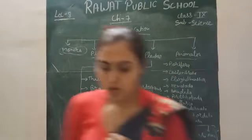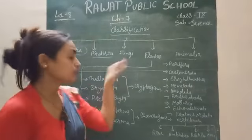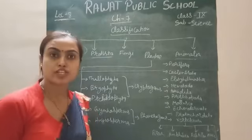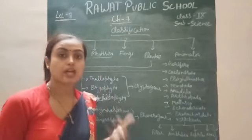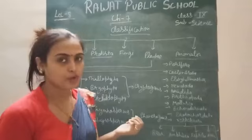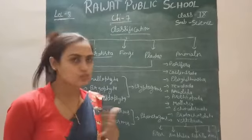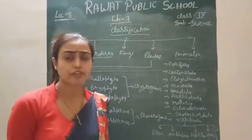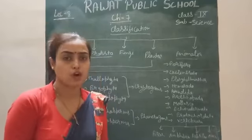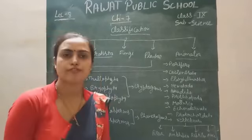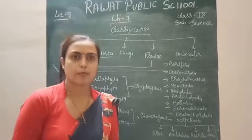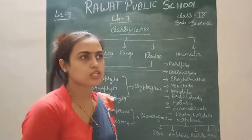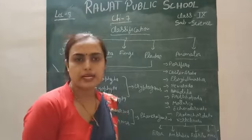Next is Fungi. Fungi consist of unicellular or multicellular but eukaryotic organisms. They have a special fiber-like structure called hyphae, which helps in the absorption of nutrients and water from the soil. They do not perform photosynthesis because they do not have chlorophyll molecules. They depend for feeding on dead organic matter, so they are called saprophytes. Their cell wall is made up of a complex sugar called chitin.